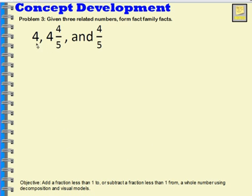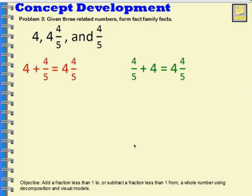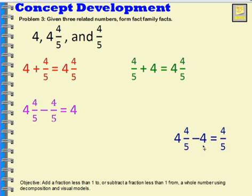So if we're given 3 different numbers, 4, 4 and 4 fifths, and 4 fifths, can we make addition subtraction fact families? Oh yeah. I can see that if I add 4 plus 4 fifths, I would get 4 and 4 fifths. Also, if I added 4 fifths plus 4, I would get 4 and 4 fifths. You can also work with subtraction. If I start with 4 and 4 fifths and subtract 4 fifths, I'd get 4. And if I start with 4 and 4 fifths and I subtract 4, I would get 4 fifths.